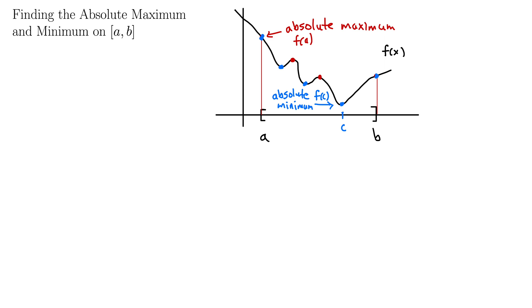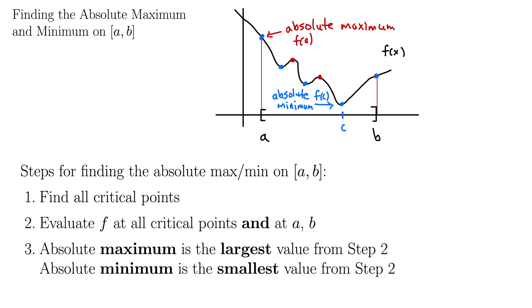So seeing this, we can probably deduce what the method is, but I'll write it out. This just codifies what we were saying with this illustration here. Here we have the steps for finding the absolute max or min on closed interval [a,b]. And note this only works on a closed interval. And note that we're assuming that this function is continuous on this closed interval [a,b] here.